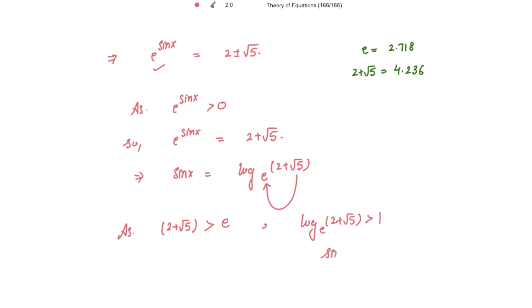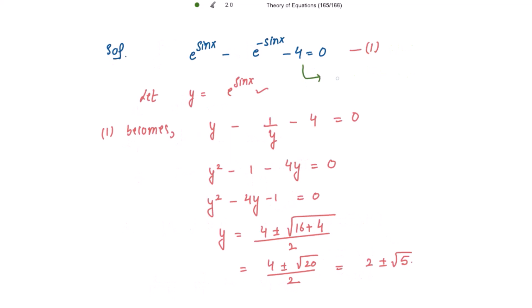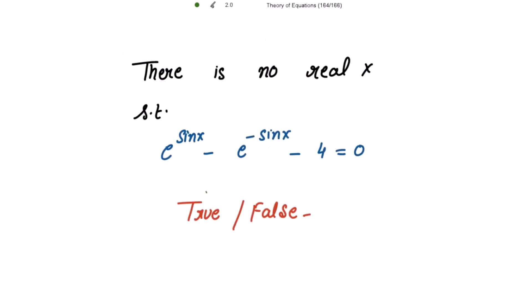That means sin x is strictly greater than 1, which cannot be possible because the range of sin x is from minus 1 to 1 only for all x belonging to the real numbers. So sin x cannot be strictly greater than 1. Therefore, this statement is true.